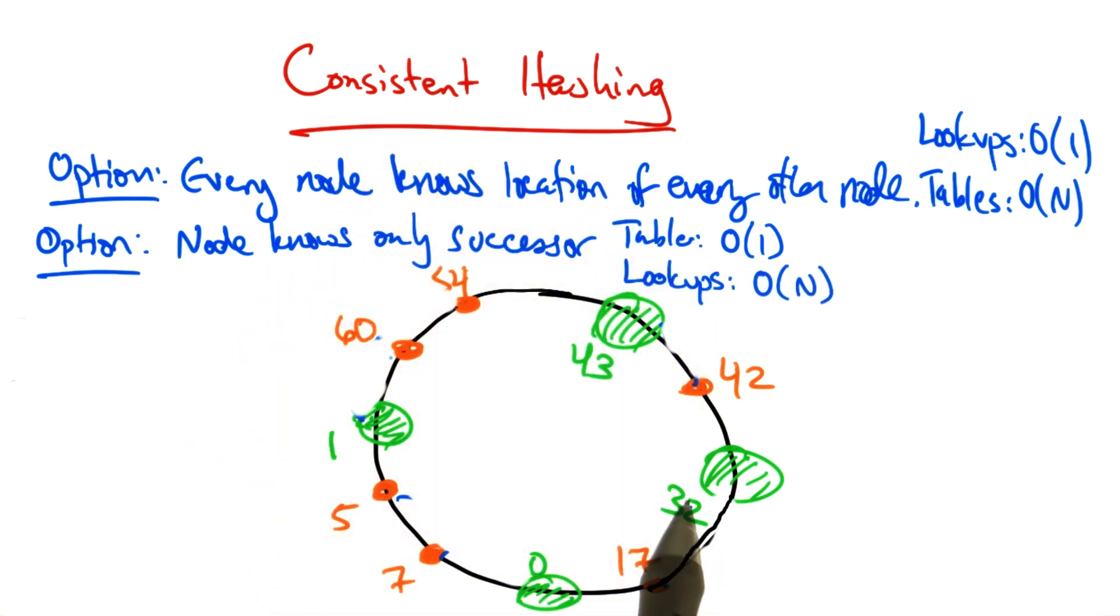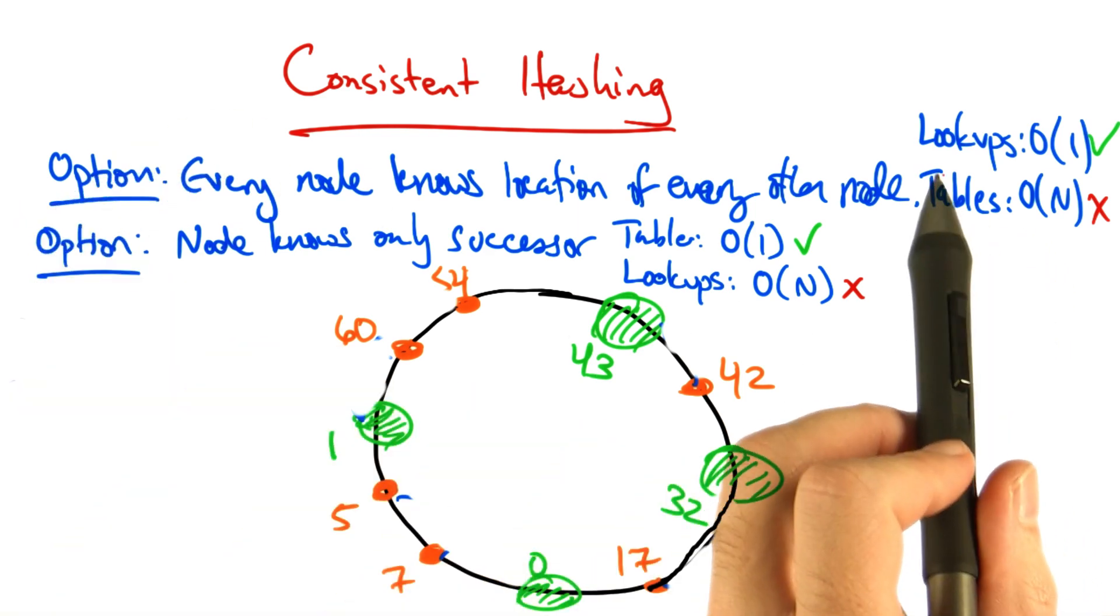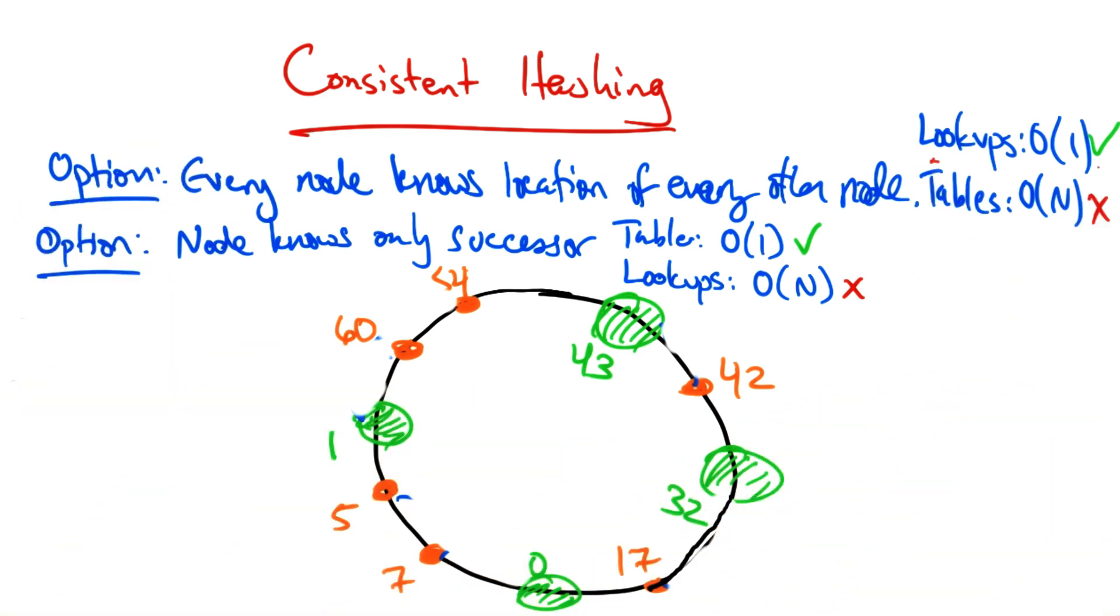But locating the content, as before, would require order n lookups. So in summary, if every node knows the location of every other node, then lookups have good performance at the expense of larger tables. If every node only knows its successor, then routing tables can be small, but every lookup operation is order n.